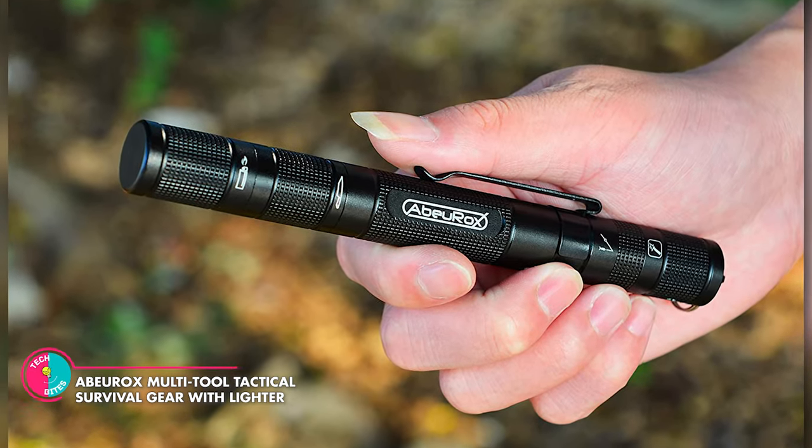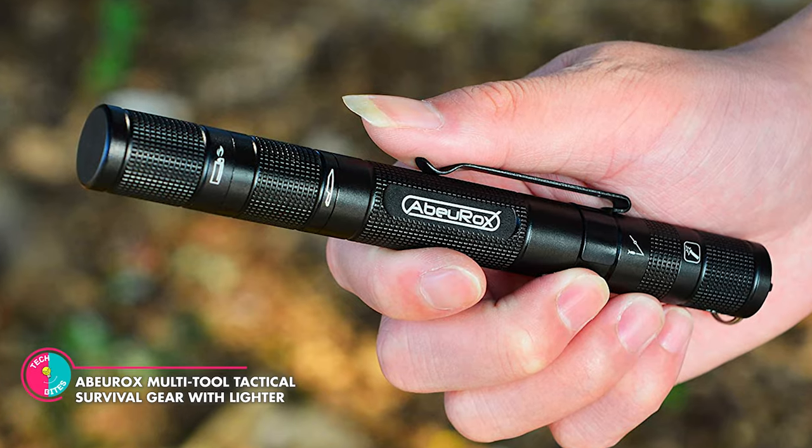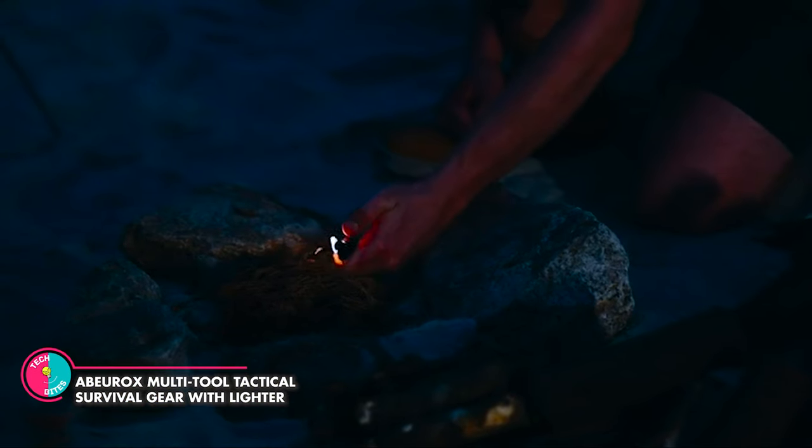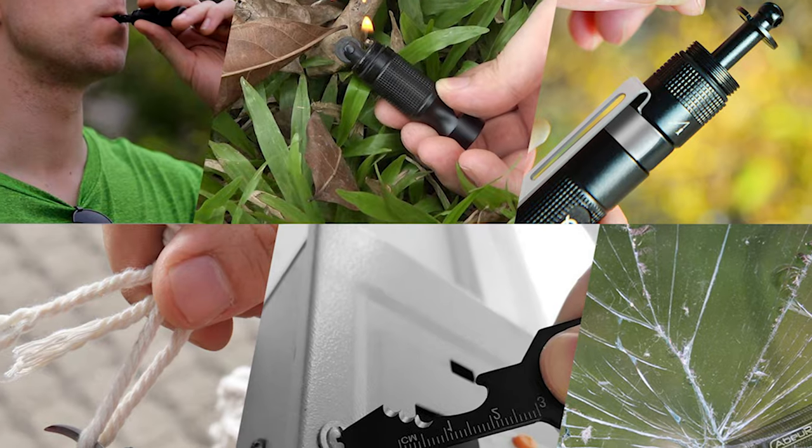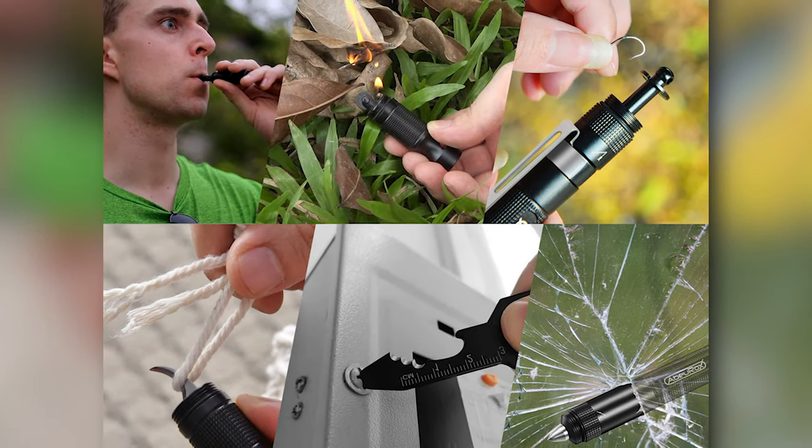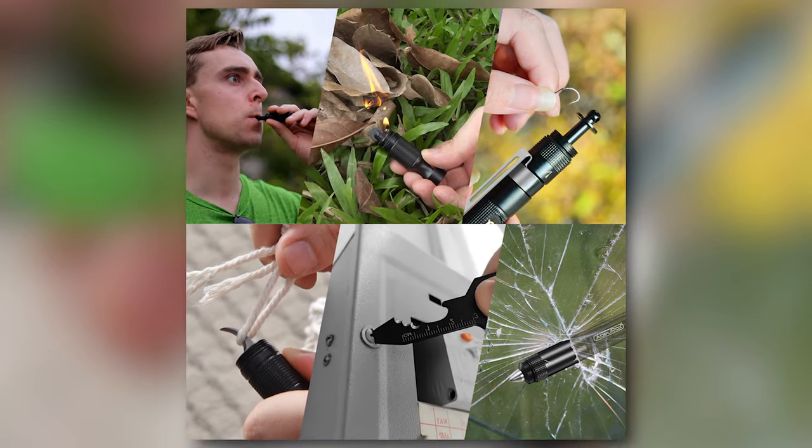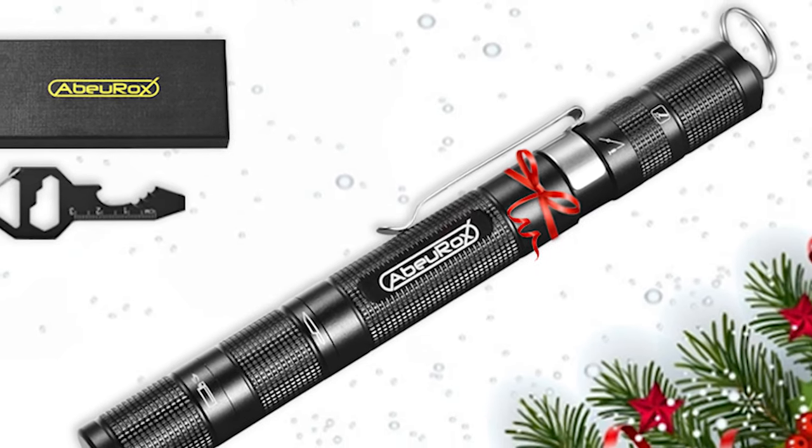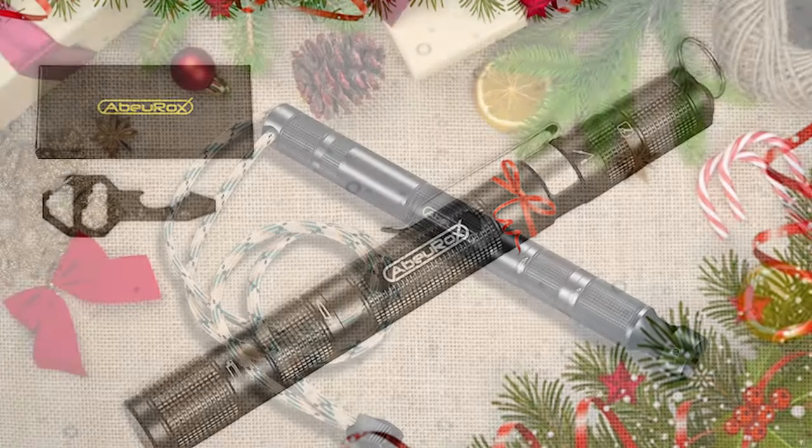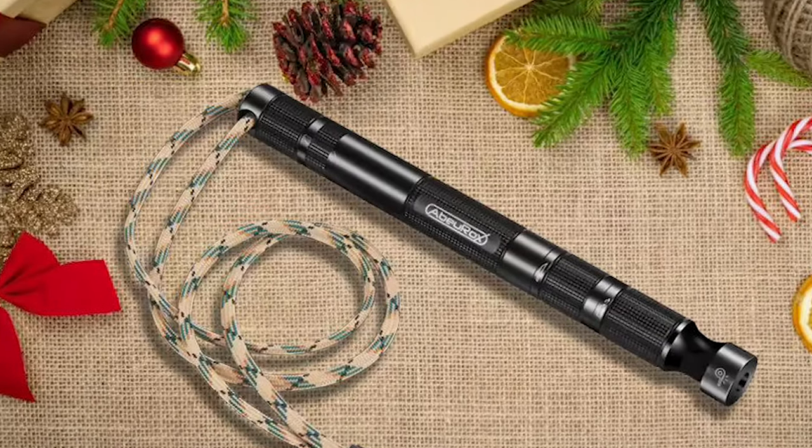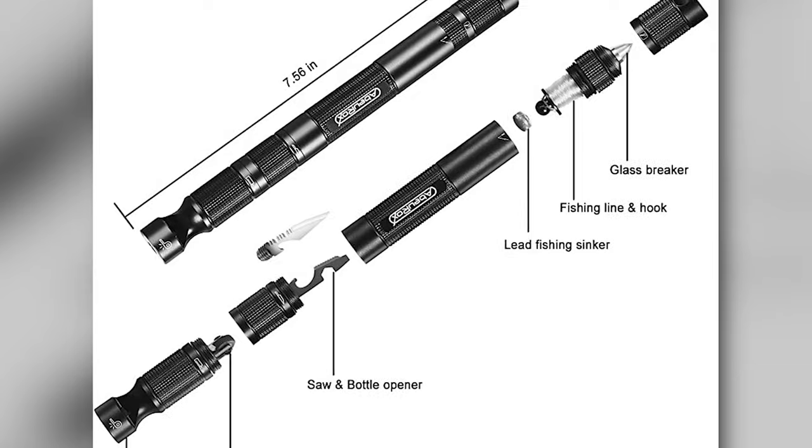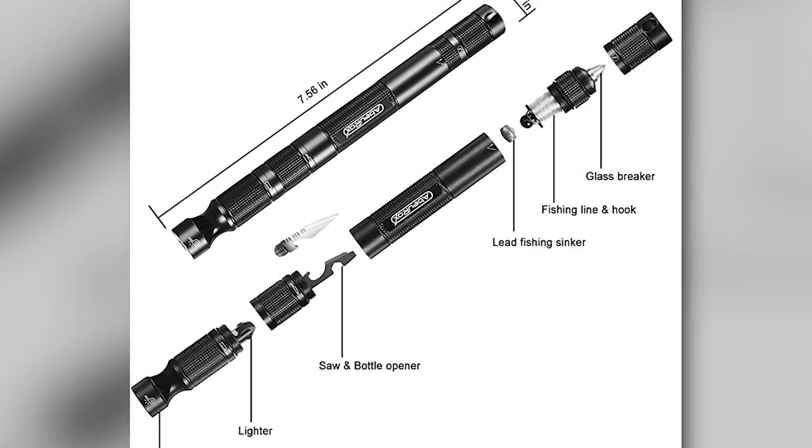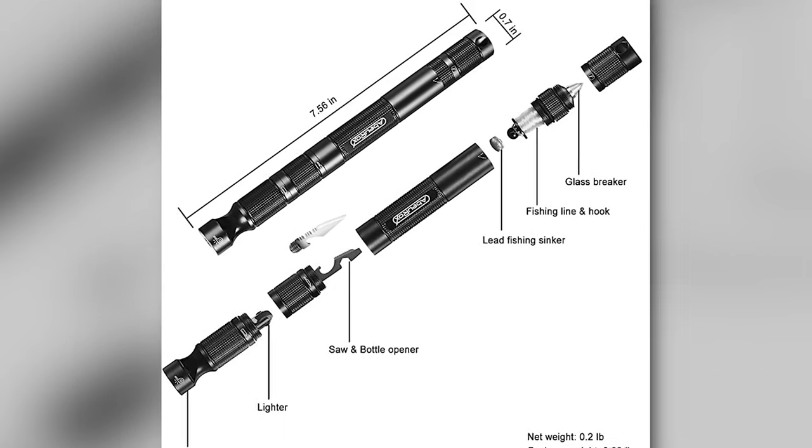Abo Rocks Multi-Tool Tactical Survival Gear with Lighter. This is a novel multi-tool because it's the first time a lighter, fishing tool, tungsten glass breaker, whistle, and small cutter have been combined into one. The interior of this tool is constructed with stainless steel and the main body of the device is made of aircraft-grade aluminum. This tool serves as both a daily necessity and an ideal survival tool for self-defense or survival in dire circumstances.